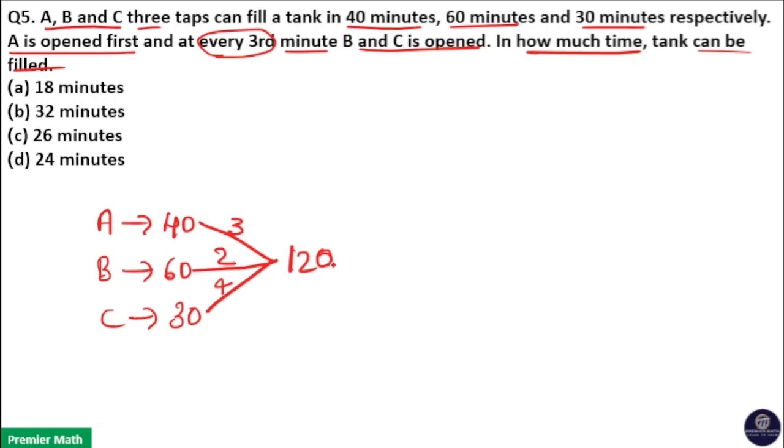Here this meaning of this diagram is 120 is LCM means work is 120, that is here tank capacity is 120 liter. And here three means A's efficiency is three, two means B's efficiency is two, four means C's efficiency is four.